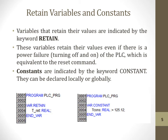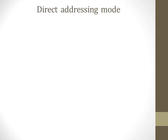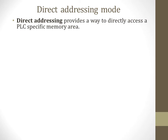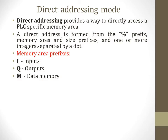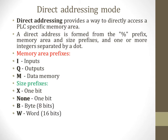This is an example of how to declare a retain variable, and this is an example of constant variables used in programs. The next topic is direct addressing mode. Direct addressing provides a way to directly access a PLC-specific memory area. A direct address is formed from a prefix, memory area, size prefix, and one or more integers separated by dots. Memory area prefixes are: I for inputs, Q for outputs, M for data memory.